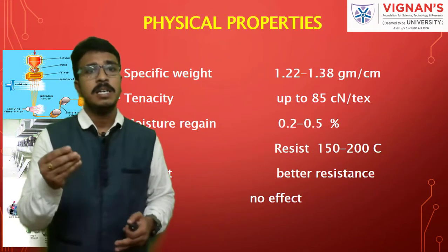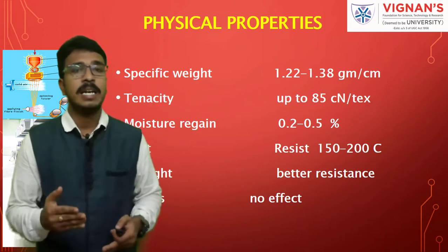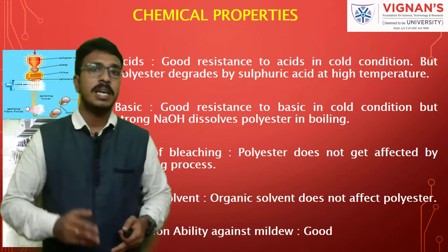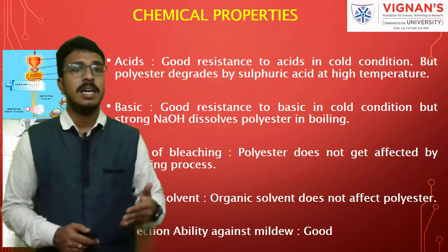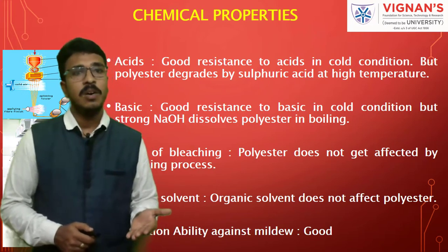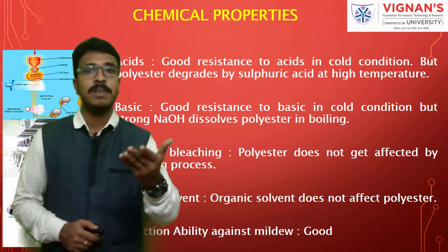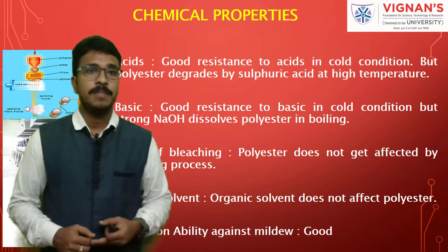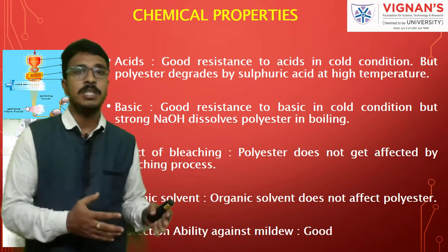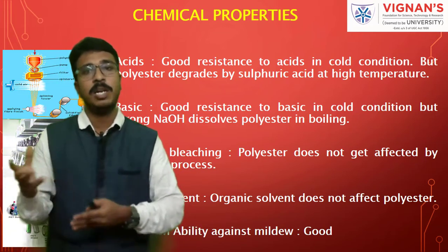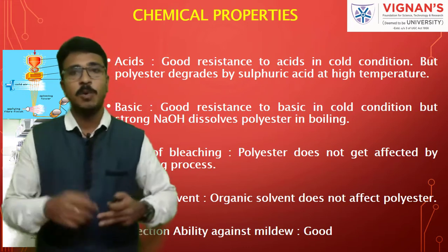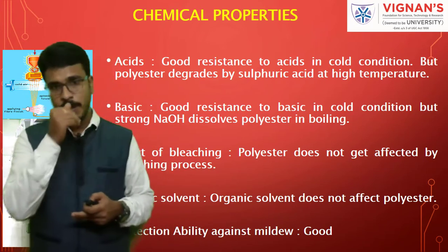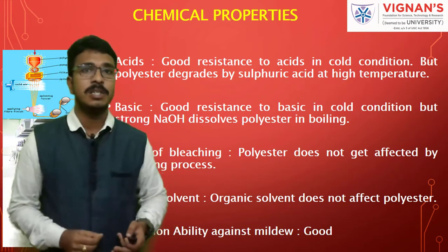Physical properties include specific weight, tenacity, moisture regain, heat resistance, and resistance to sunlight and insects. For chemical properties: polyester has good resistance to acids in cold conditions, but at high temperatures with acetic acid it will degrade. Similarly, treatment with NaOH at high or boiling temperatures causes degradation. Polyester is not affected by bleaching agents, and organic solvents generally do not affect it except for phenol.